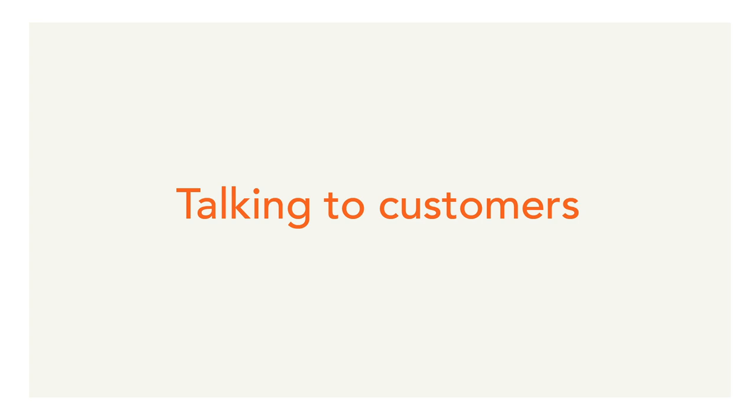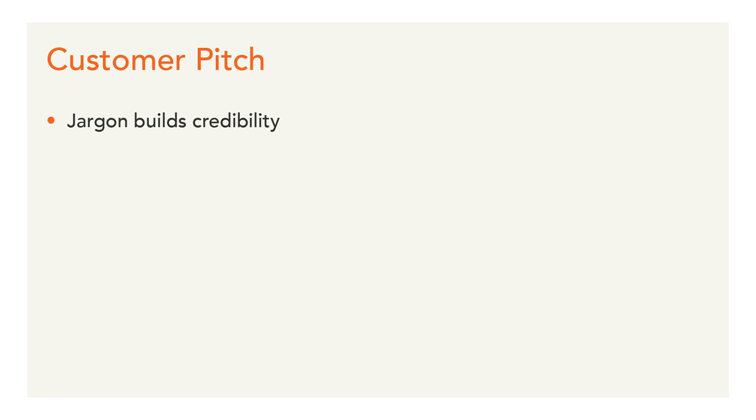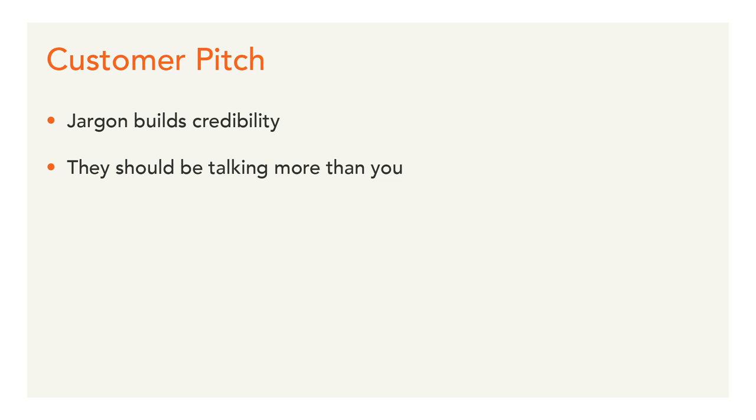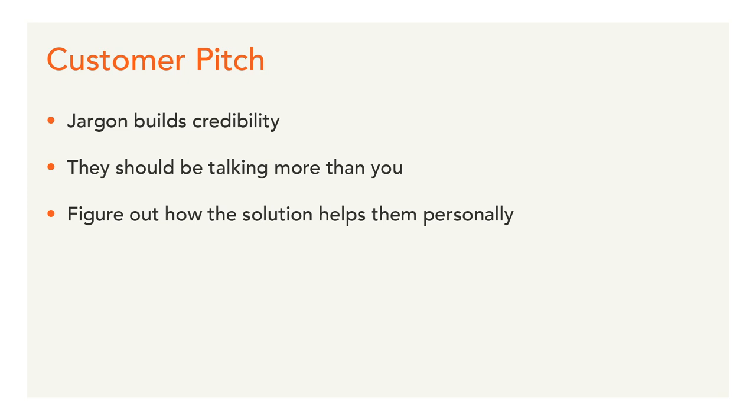When you're talking to a customer, one of the ways that you build credibility is that you use jargon — you use the language of the industry. Another thing that you do is try to get them to speak a lot about the problem that they have; you want them to be talking more than you. And then the third thing is that you try to figure out how the solution can help them personally as soon as possible. This customer pitch can be used on a sales call, on the front page of your website, in your FAQ, or in user interviews — a lot of the language is really relevant there.